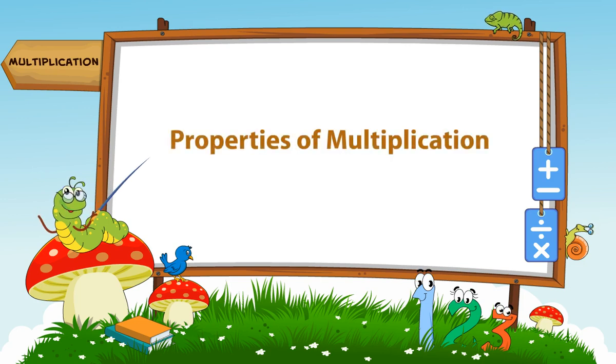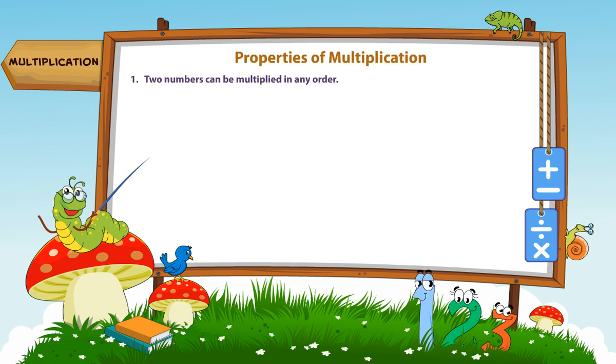Multiplication. Properties of Multiplication. Two numbers can be multiplied in any order. For example, 52 multiplied by 9 is the same as 9 multiplied by 52.